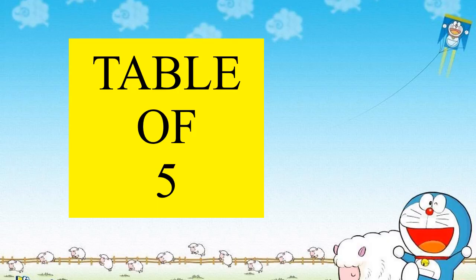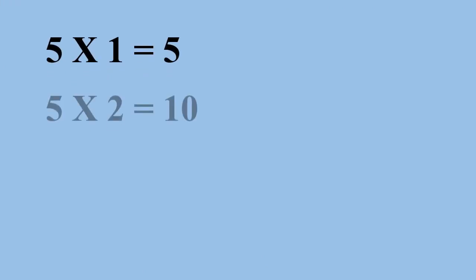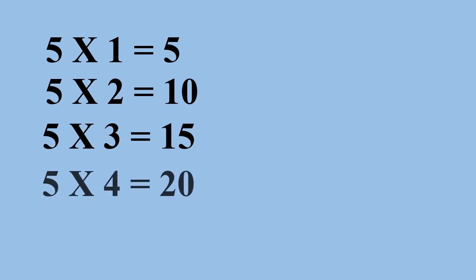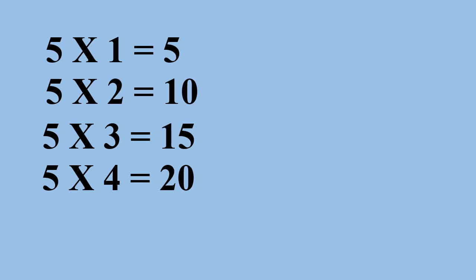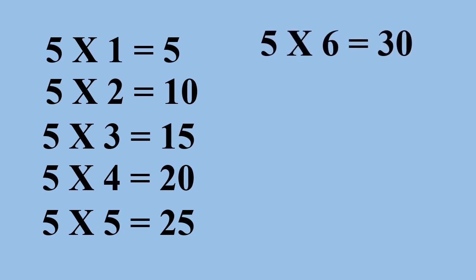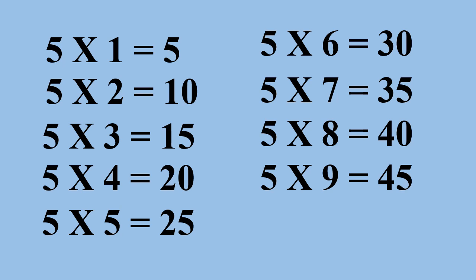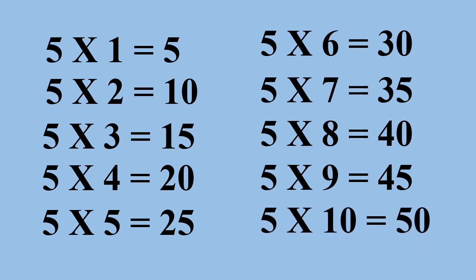Table of 5. 5 1s are 5. 5 2s are 10. 5 3s are 15. 5 4s are 20. 5 5s are 25. 5 7s are 35. 5 8s are 40. 5 9s are 45. 5 10s are 50.